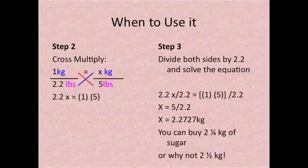Step 2. Cross multiply. So you have 2.2 times X is equal to 1 times 5. Step 3. Divide both sides by 2.2 and solve the equation. We're dividing by 2.2 so that we can isolate the X. So 2.2 divided by 2.2 equals 1. 1 times X is just X. And then 1 times 5 is 5 divided by 2.2.